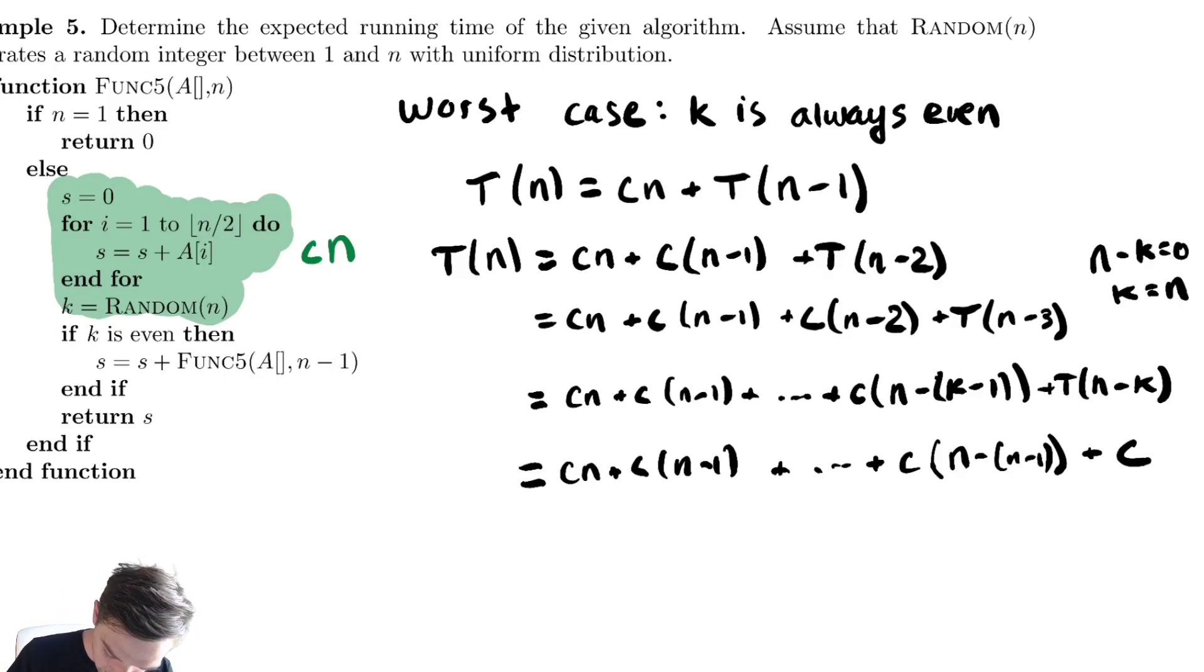This is an arithmetic summation. It converges to c times n times (n+1) over 2. I went through that rather quickly because we have seen that summation several times before.